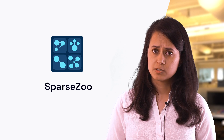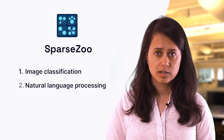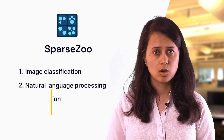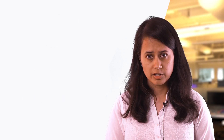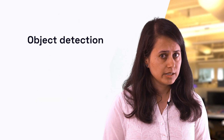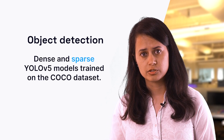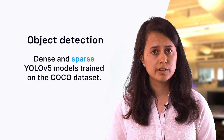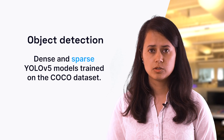Sparse Zoo contains models for tasks like image classification, natural language processing, and object detection, with more being added regularly. For object detection specifically, we have dense as well as sparsified versions of the YOLO V5 family of models trained on the COCO dataset.